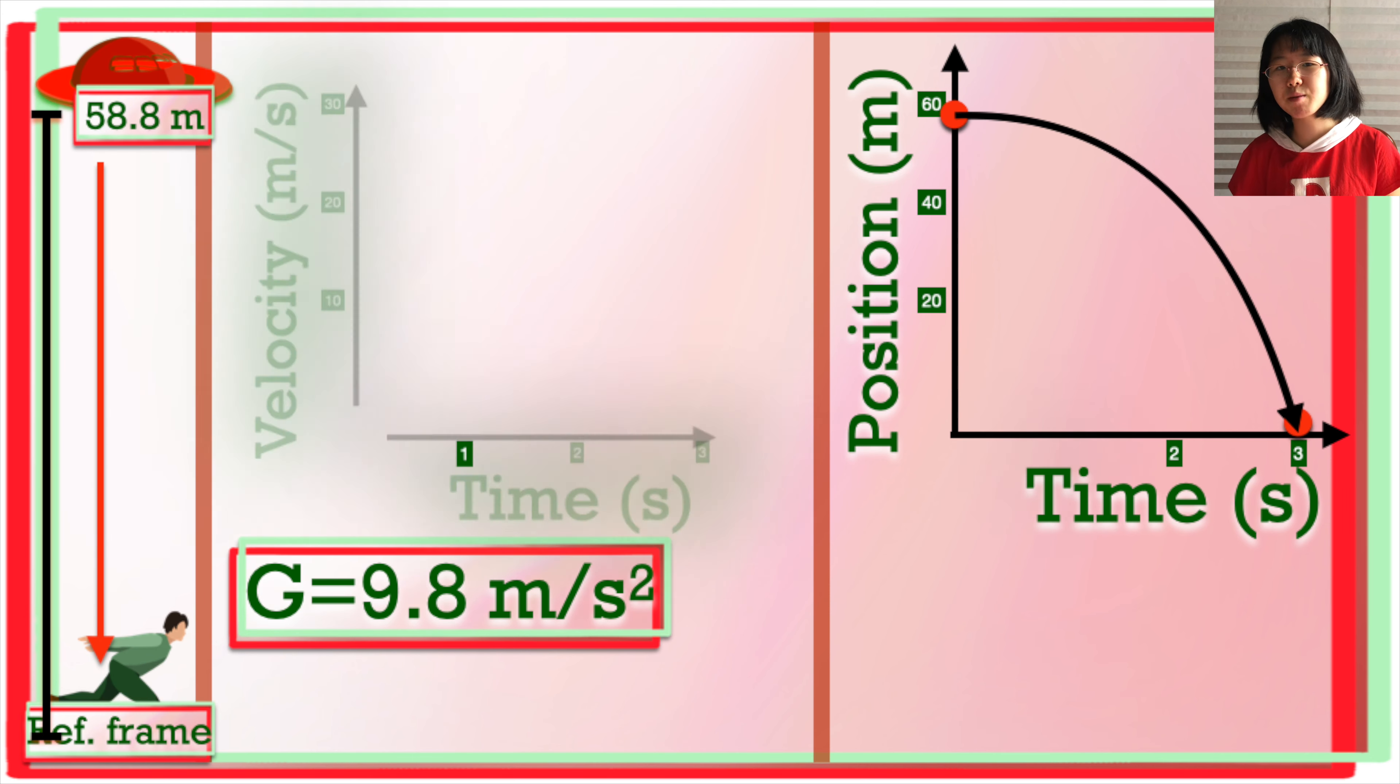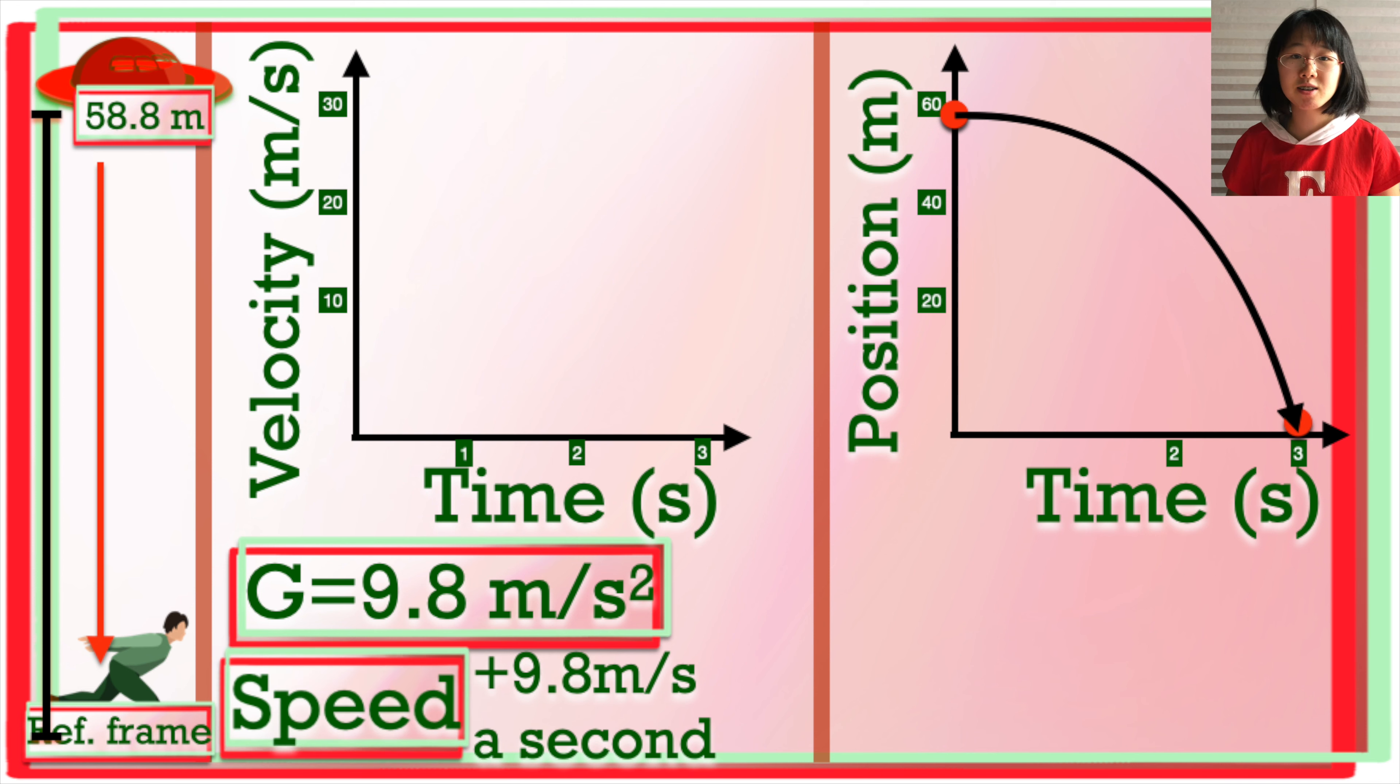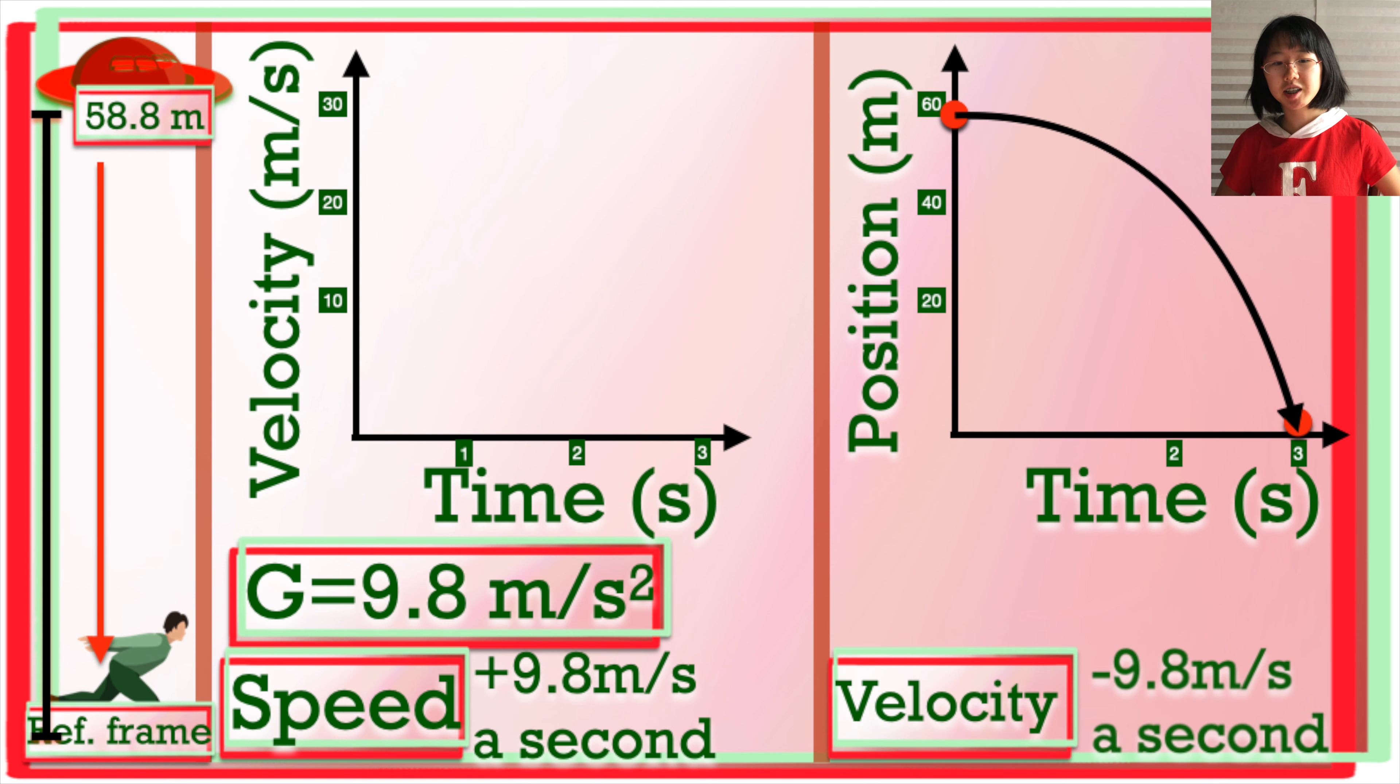Now what about our velocity time graph? Well we know that an extra 9.8 meters per second of speed is added on to the speed of the UFO every second, but as we said earlier, it's falling towards you, so the velocities will be negative. Once again, we're seeing the difference between speed and velocity.